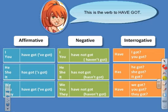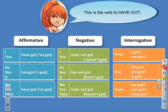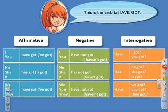The affirmative forms: I have got / I've got; you have got / you've got; he has got / he's got; she has got / she's got; it has got / it's got; we have got / we've got; you have got / you've got; they have got / they've got.